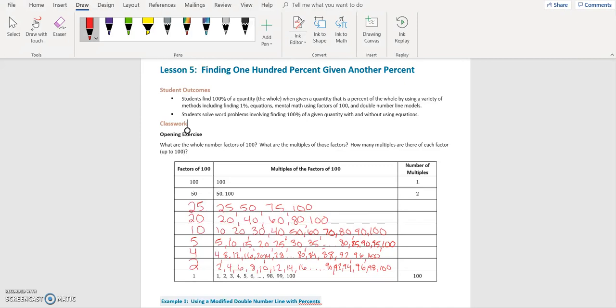Number of multiples, so if we count here we have 1, here we have 2, here we have 4, here we have 5, here we have 10, 20, 25, and 50. So if you notice our number of multiples is the same numbers as the factors just going in the other direction.